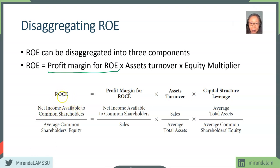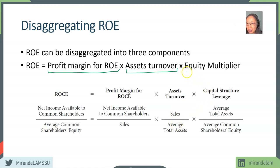ROE is net income available to common stockholders divided by average common stockholder equity. The three-part decomposition starts with profit margin: net income available to common stockholders divided by sales. The second component is asset turnover: sales divided by total assets. The final component is the equity multiplier, which has many names. The important thing to remember is that it represents capital structure leverage.